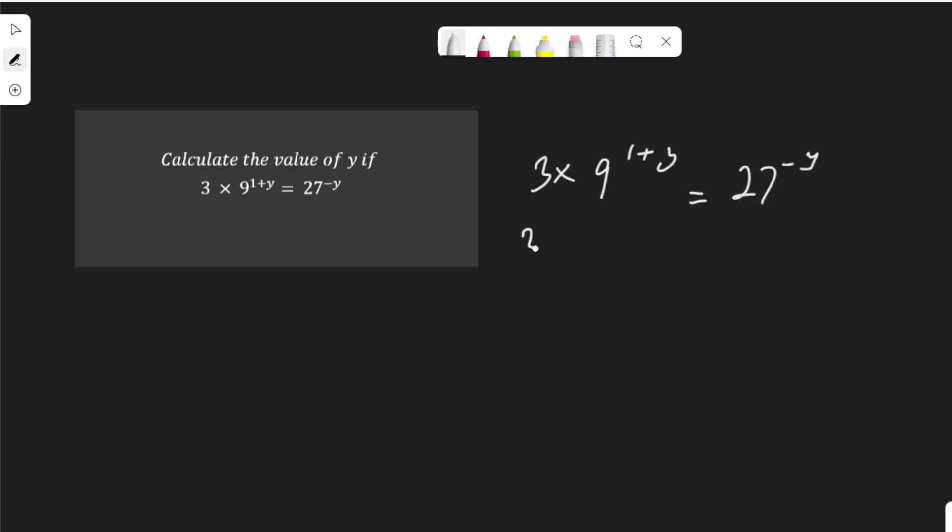Let me express 9 in this form, that is 3 to the power of 2, and multiply 1 plus y, equal to expressing 27 in this form, that is 3 to the power of 3 multiplied by negative y.